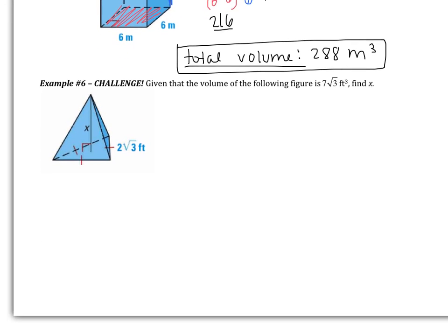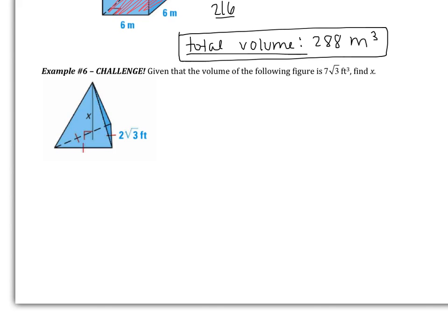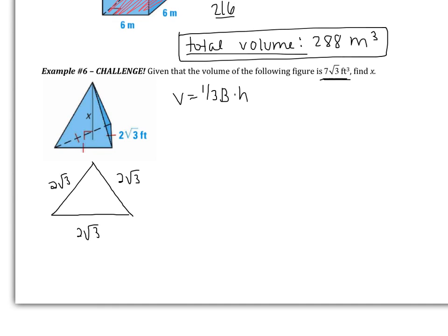We're going to move on to example number 6 — it says challenge. This one is working backwards. I'm telling you the volume is 7 root 3, and I'm asking you to find the height. This is a pyramid, so volume equals one-third area of the base multiplied by the height. We start by finding the area of the base. The base is an equilateral triangle where all sides are 2 root 3. To find the area it's going to be one-half times base 2 root 3 times the height, which I'll call H. I'm going to drop a height in here — that 2 root 3 splits into root 3 and root 3. This gives me a 30-60-90 triangle with sides L, L root 3, and 2L.